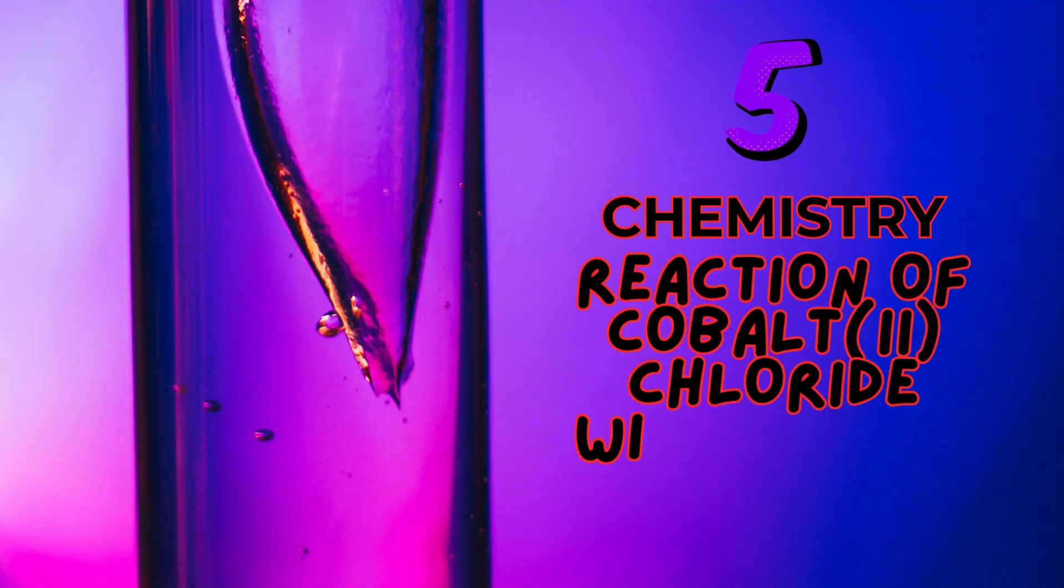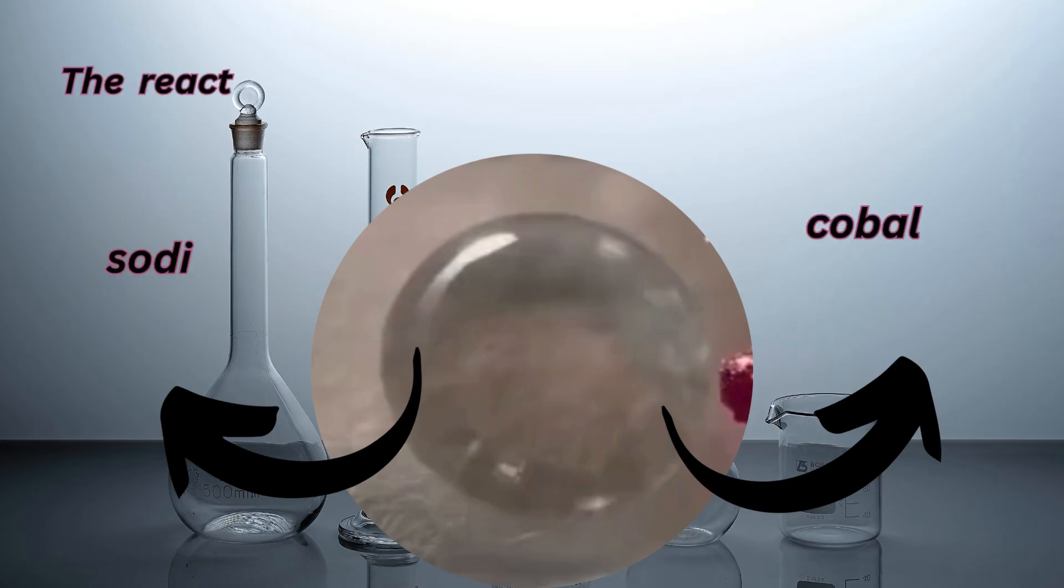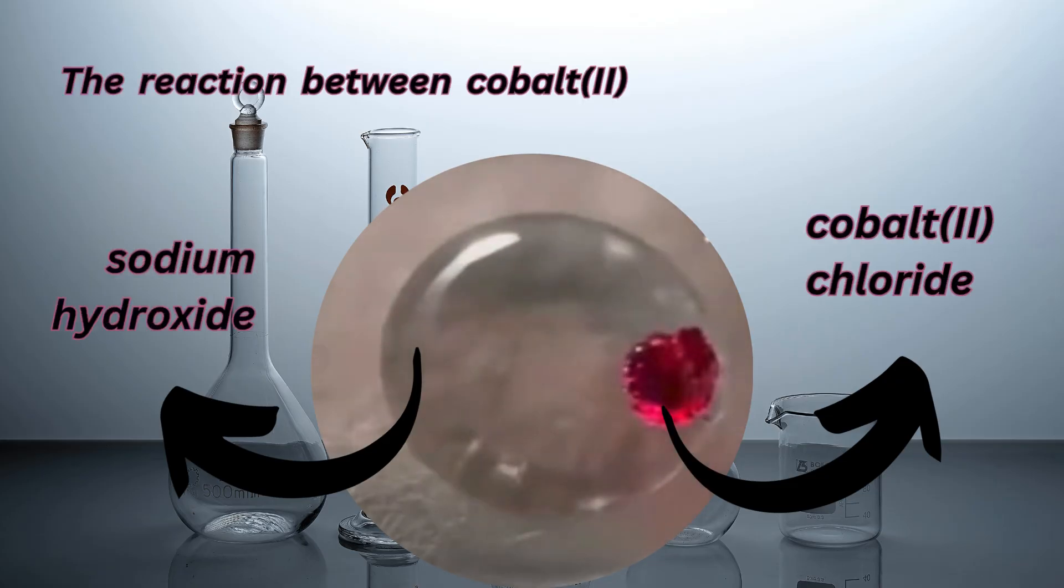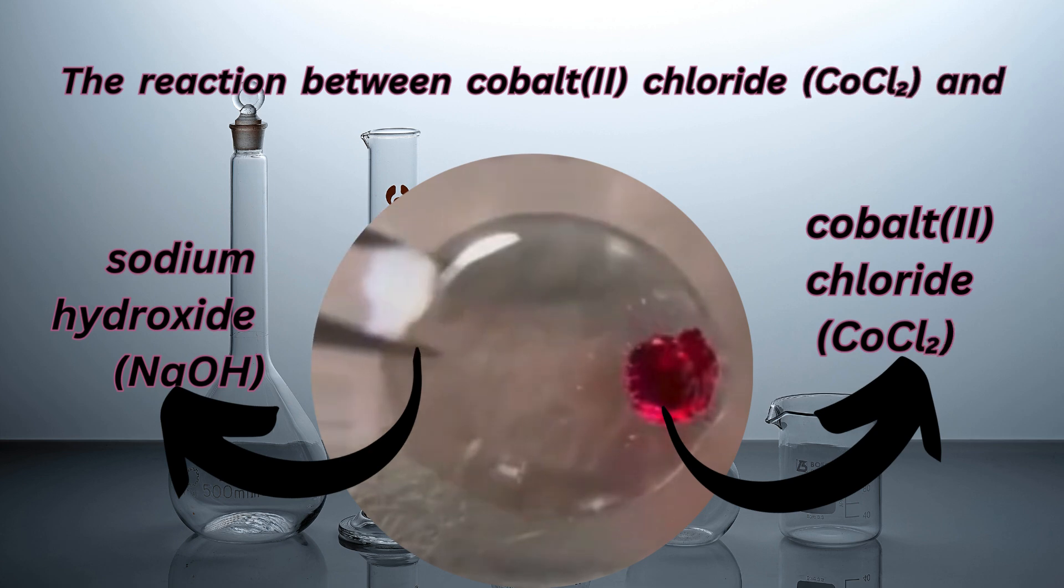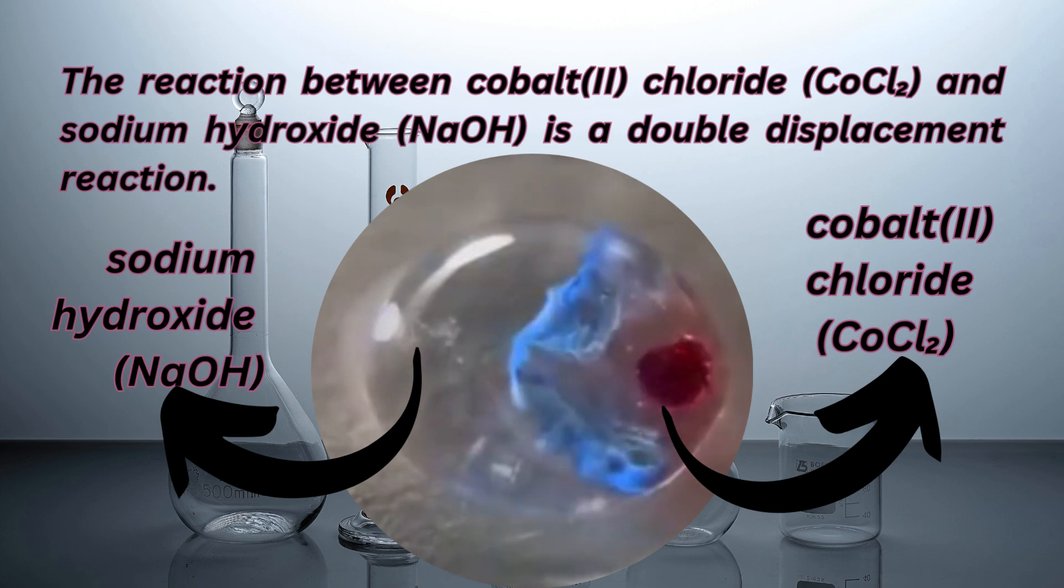Reaction of cobalt(II) chloride with sodium hydroxide. The reaction between cobalt(II) chloride (CoCl2) and sodium hydroxide (NaOH) is a double displacement reaction.